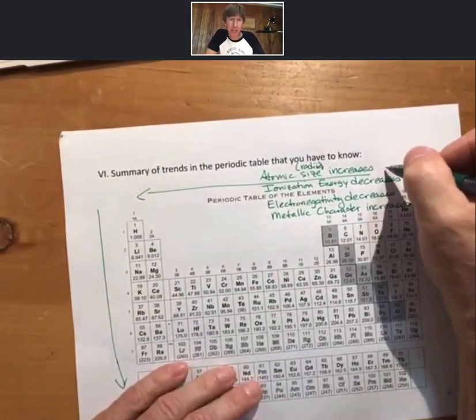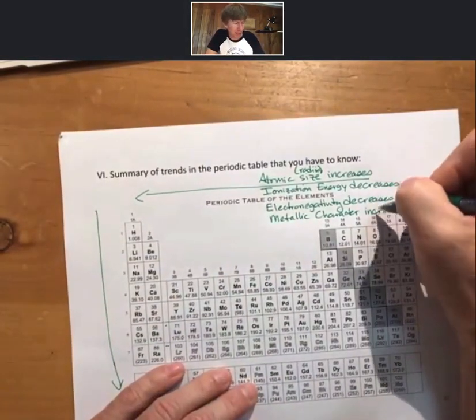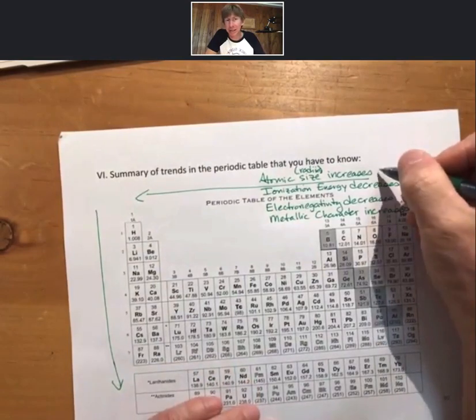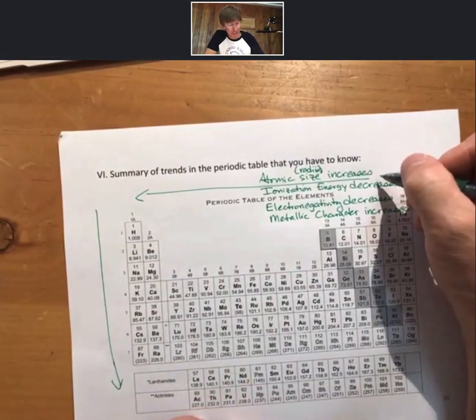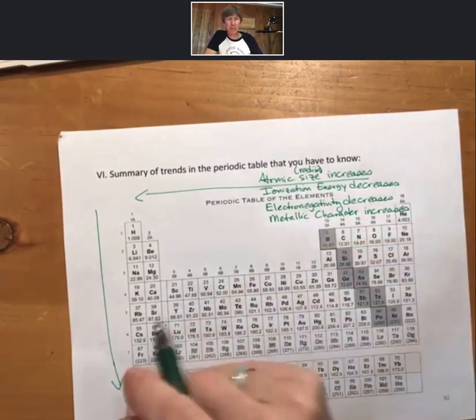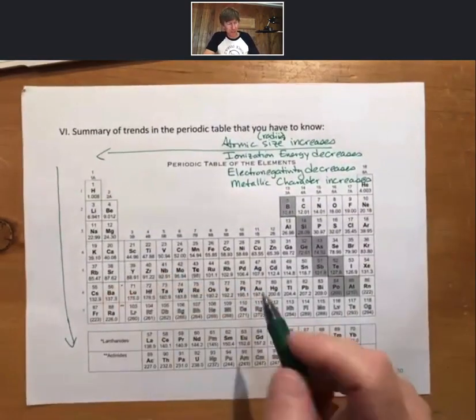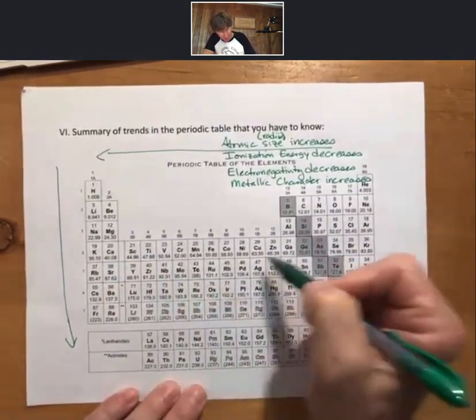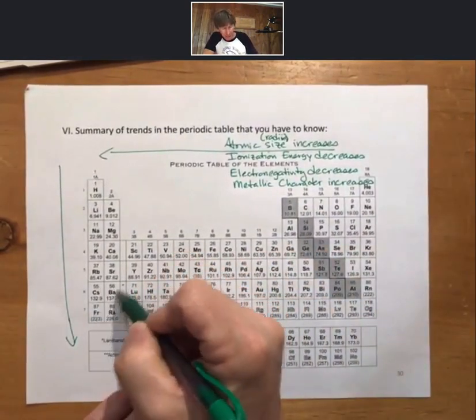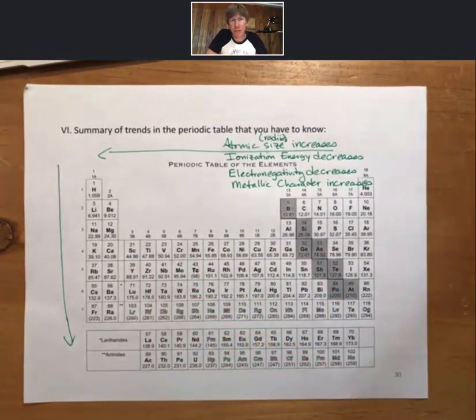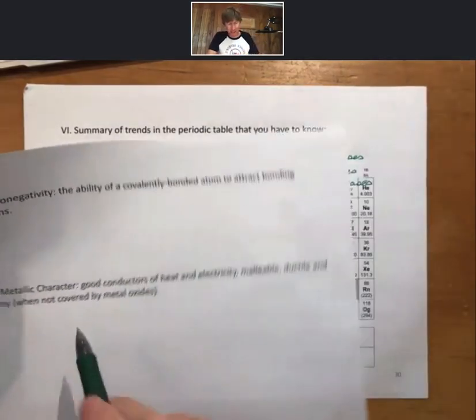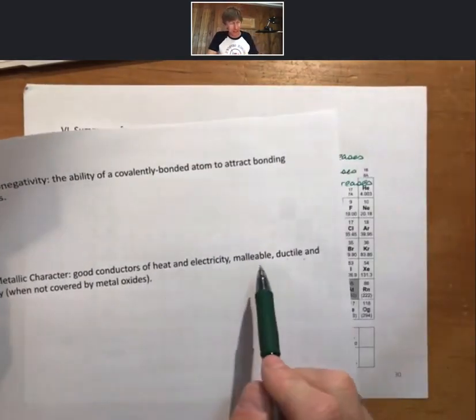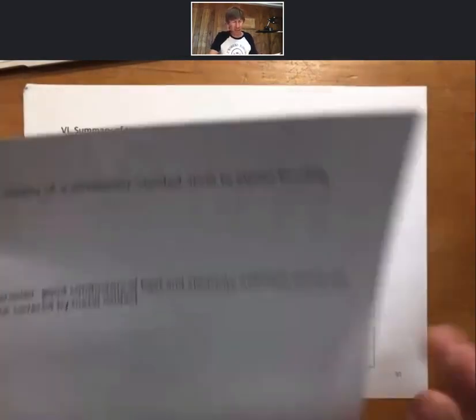There's always a couple questions on the exam about these trends. Actually, I would say when you memorize them, memorize them from the top down because the atomic size is the one that I ask about the most. So atomic size increases. I do want to say a couple things about this last one, metallic character. So all the way over on the periodic table, these are the metals. All the way down here in cesium in the corner are the most metal-y of metals, meaning they have the best, they are the best conductors of heat and electricity. They are best at being malleable, ductile, and shiny.